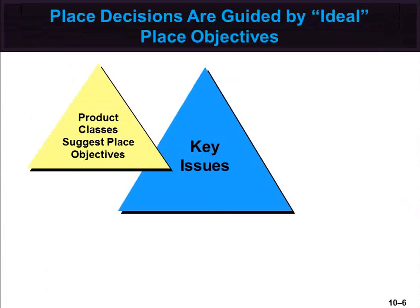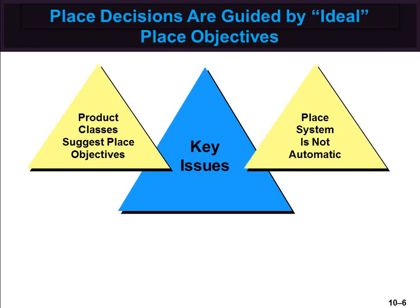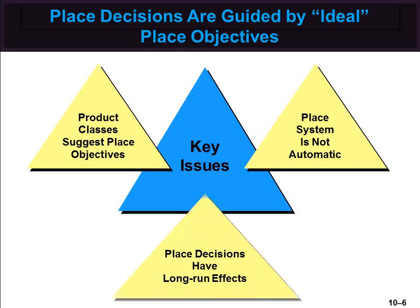Customers may have different needs with respect to time, place, and possession as they make different purchases. Product classes suggest place objectives. Different levels of customer urgency, convenience, and product information needs naturally suggest different place needs as well. The place is not automatic. More than one place arrangement may be appropriate or needed to reach different target markets effectively. Place decisions have long-run effects and are usually harder to change than those made for other components of the mix.